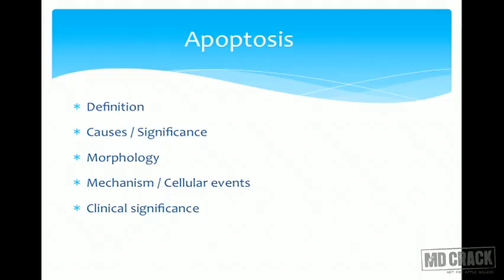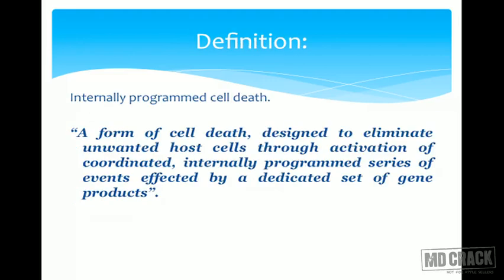We will cover this topic under the following headings: definition, causes of apoptosis, clinical significance, how to identify apoptotic bodies, morphological findings, the mechanism, and the clinical significance of apoptosis.